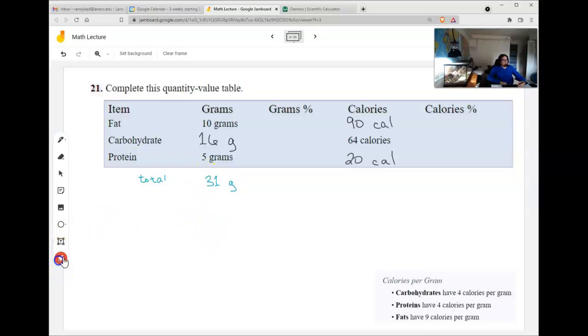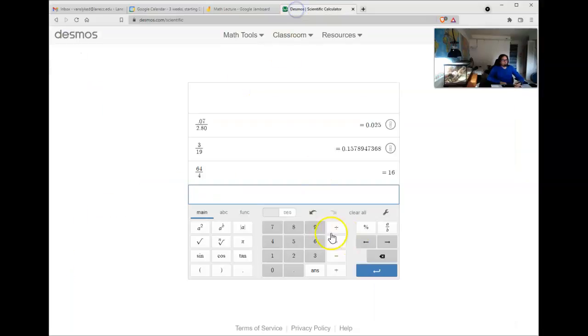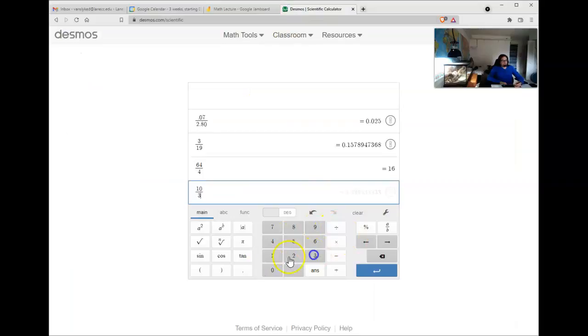And I need to turn them into percentages. So again, I need a total. 10 and 16 and 5. That's going to be 31 grams. And then I do each of them division. 10 divided by 31. Gives me 0.3225, blah, blah, blah. So I'll scoot the decimal point twice and have about 32%.